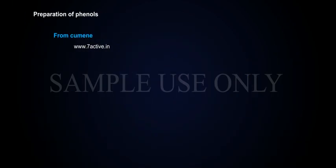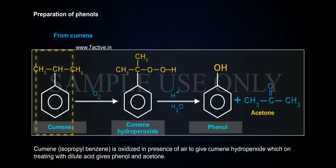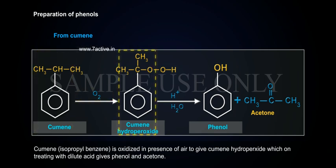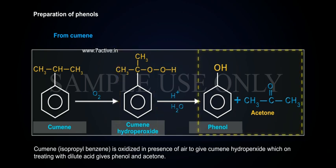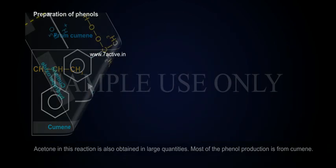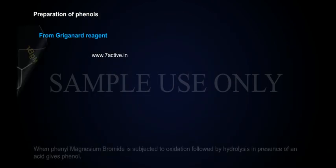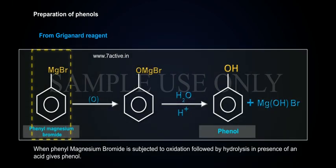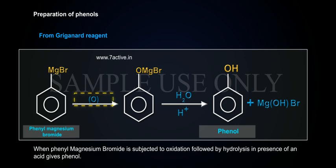From cumene: Cumene (isopropyl benzene) is oxidized in the presence of air to give cumene hydroperoxide, which on treating with dilute acid gives phenol and acetone. Acetone is also obtained in large quantities in this reaction. Most of the phenol production is from cumene.